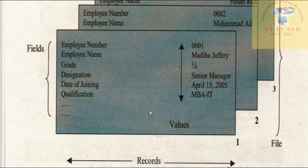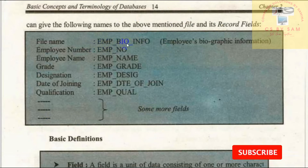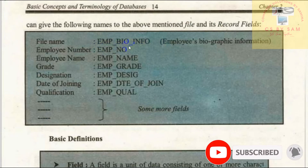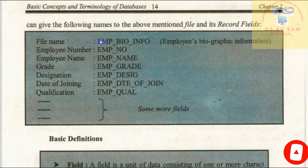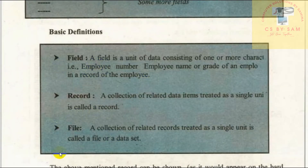The name of the field should be unique and meaningful. The name of the file should also be meaningful. For example, for employee records, the file name is M-Bio-Info. We have shortened the name of the file. If we have a student, then we have student-info. If we have a patient, then we have patient-info. This is a meaningful name. These are the basic definitions of field, record, and file.